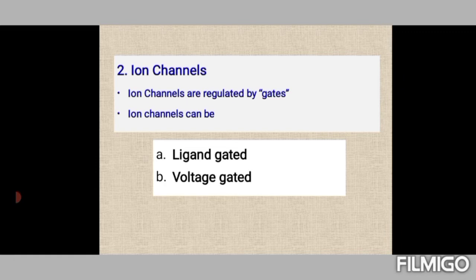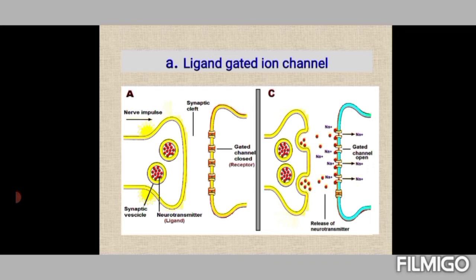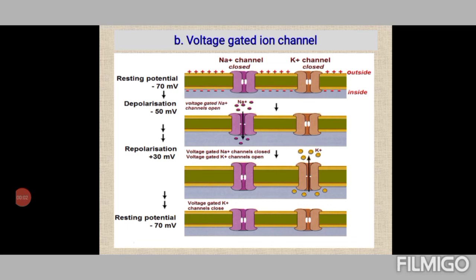Ion channels involve tunnels with gates that can be ligand-gated or voltage-gated. These are extremely rapid — perhaps a thousand times faster than carrier protein-mediated facilitated diffusion — and highly selective. A million ions per second can be carried. Their fundamental role is in the transmission of nerve impulses. As shown here, acetylcholine neurotransmitter molecules are released from synaptic vesicles and bind to receptors on the post-synaptic membrane, opening the channel and allowing sodium ions to enter, generating an action potential.